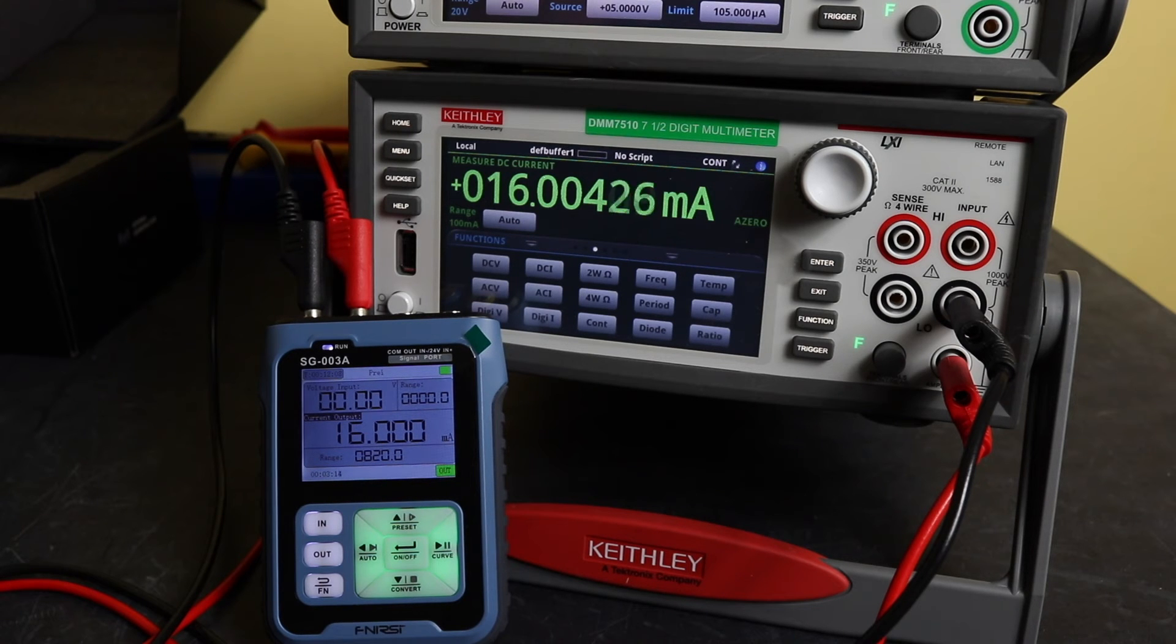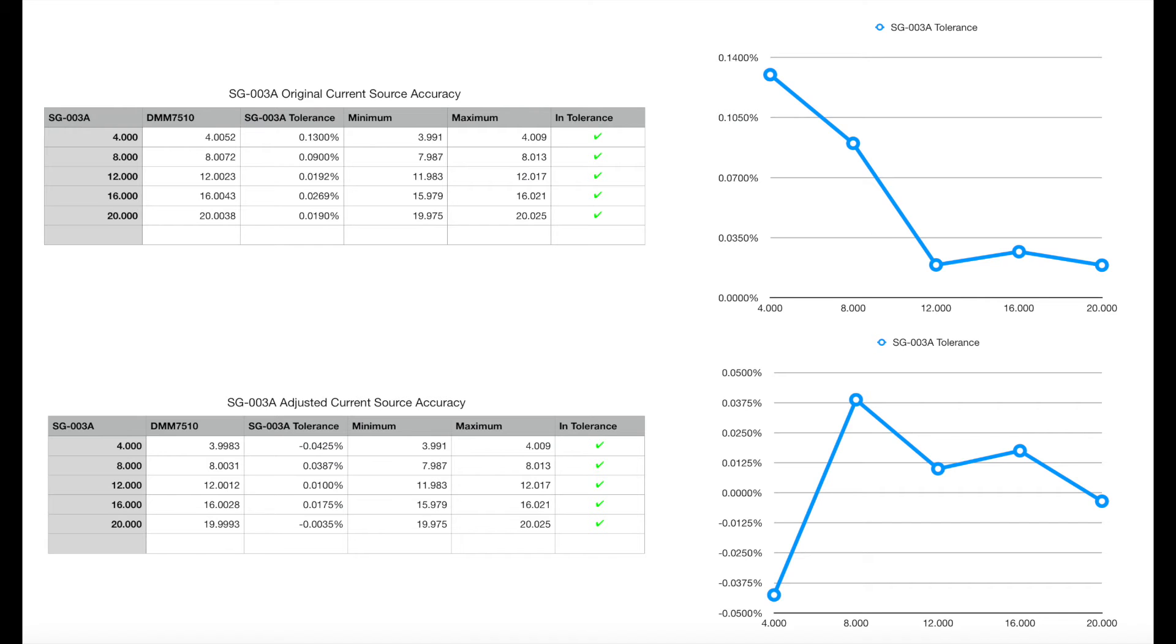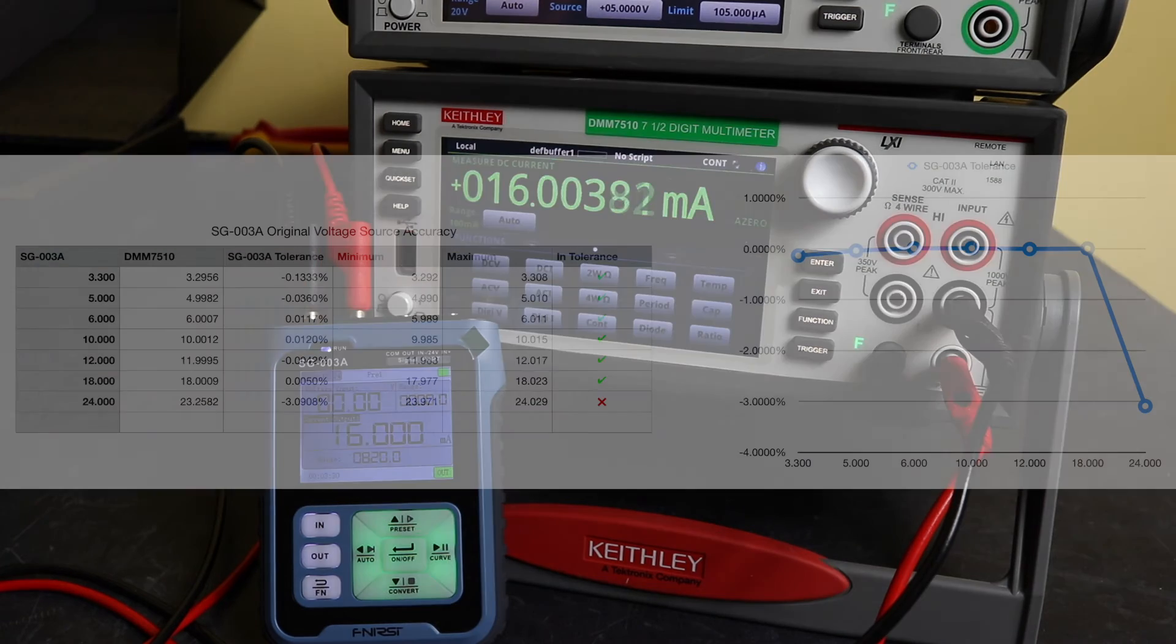But if you want the full range out of the instrument, I think you would probably struggle to get all the measurements within accuracy. It certainly seems much better sourcing when it does measurement mode. See, put the graphs up here for the source accuracy for current, you can see they are all in spec, no problems.